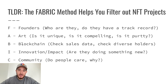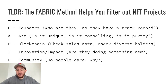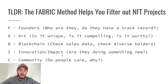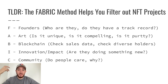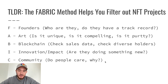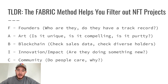There are some projects with horrible art that still do well, but it's something to consider. B stands for Blockchain — look at the blockchain metrics: the sales data, the volume in Ethereum, and how many diverse holders there are. This gives you an idea of how spread out the project is. I stands for Innovation or Impact — are they doing something new and different? And C is for Community — checking Discord, Twitter, and social media metrics to see how die-hard the fans are.